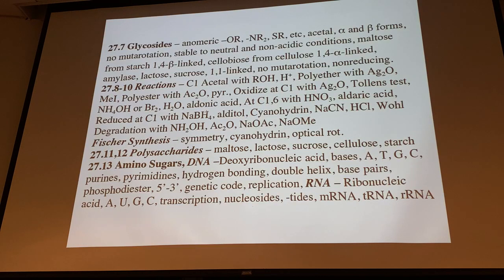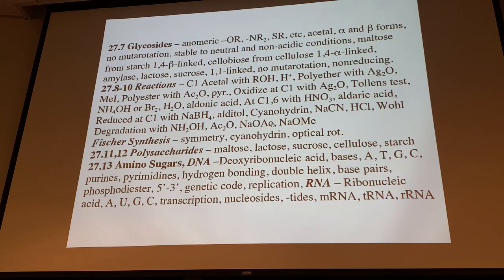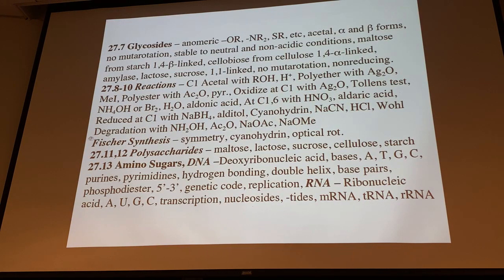Sodium borohydride reduces aldehydes to alcohols, forming alditols. The cyanohydrin reaction adds HCN to the aldehyde, adding one carbon to the chain — this is part of the Fisher synthesis. Emil Fisher won the Nobel Prize in the early 1900s for establishing all the relative stereochemistry of simple sugars through the whole series using cyanohydrins, reduction reactions, recrystallization, and optical rotation — without IR, NMR, or X-ray analysis.